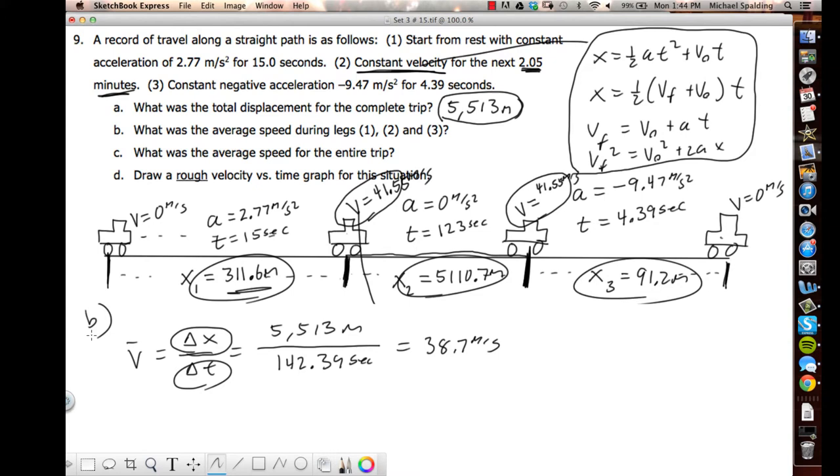Part C, what was the average speed? You know what, look. Wait, hold on. For part B, it's three different. You know what, guys, for part B, what it wants is average velocity for this part. It wants three different answers. So part A, I actually just did part C. That's part C right there.